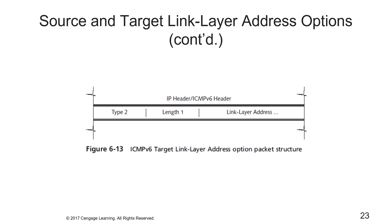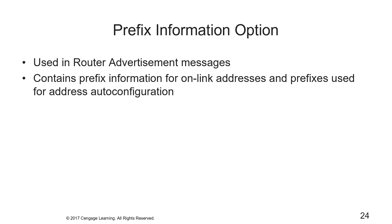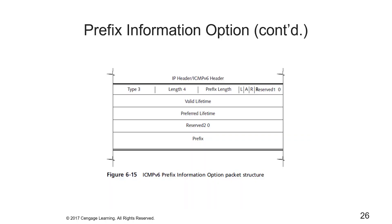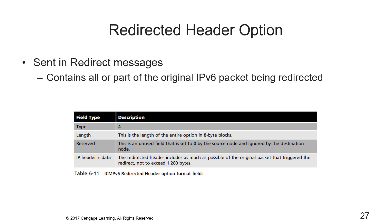The prefix information option is used in router advertisement messages and contains prefix information for an on-link address and prefixes for address auto-configuration. The option format fields and packet structure for the prefix information option are shown here. The redirected header option is sent in a redirect message and contains all or part of the original IPv6 packet being redirected; its format fields and packet structure are also shown.